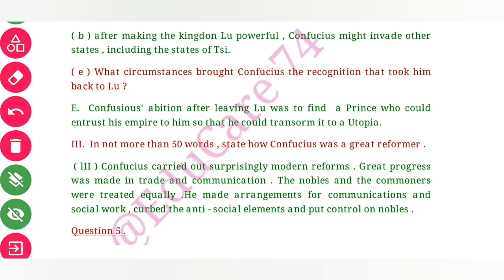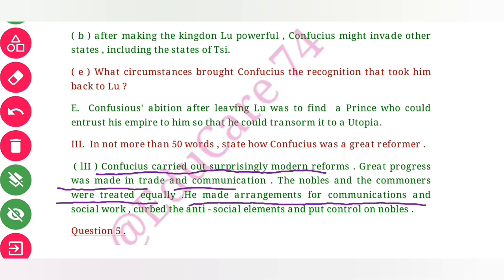In not more than 50 words, state how Confucius was a great reformer. He carried out surprisingly modern reforms. Great progress was made in trade and communication. The nobles and commoners were treated equally. He made arrangements for communication and social works, curbed anti-social elements, and put control on nobles.